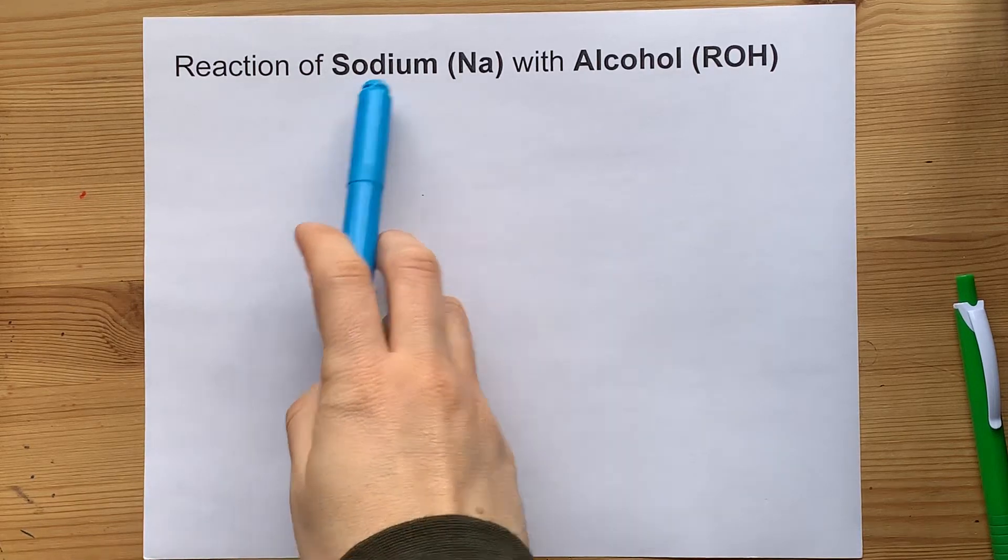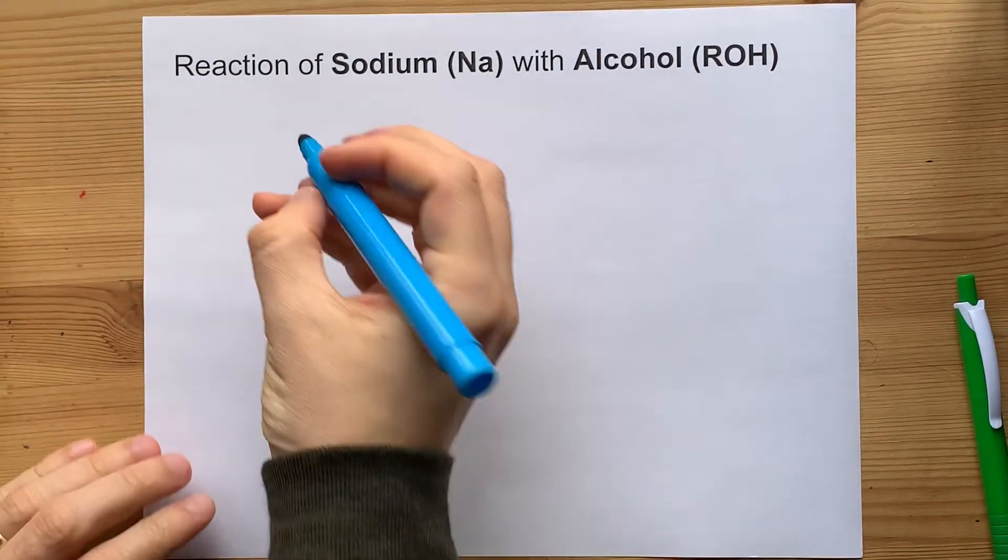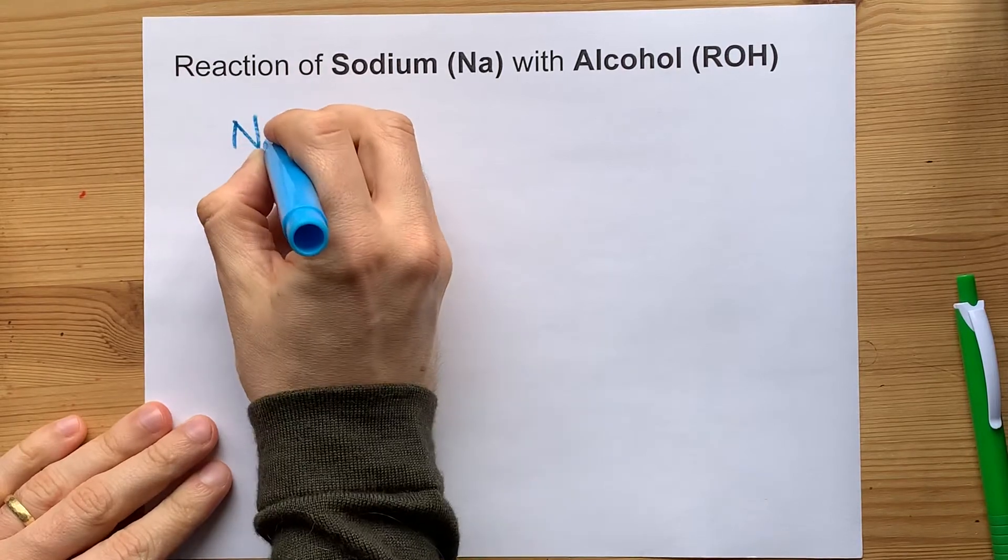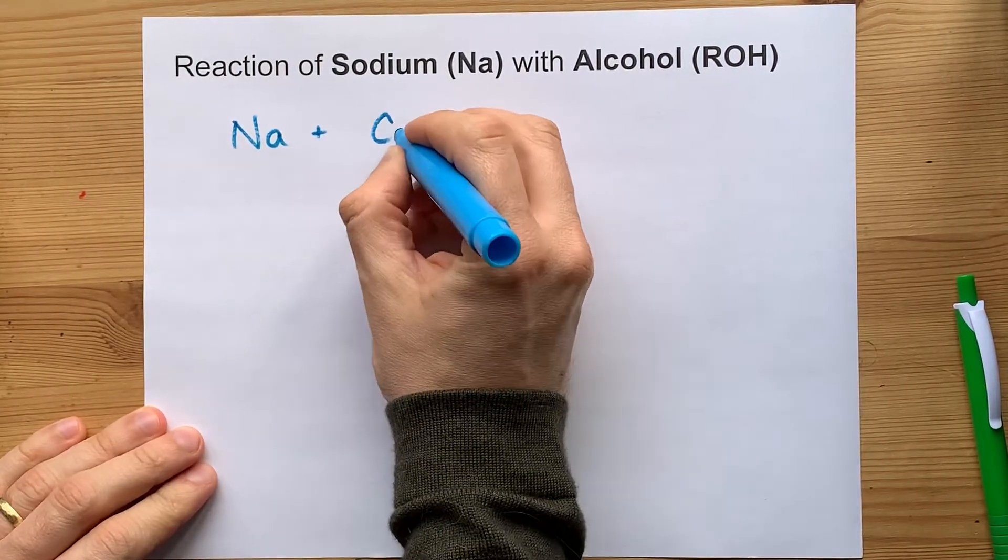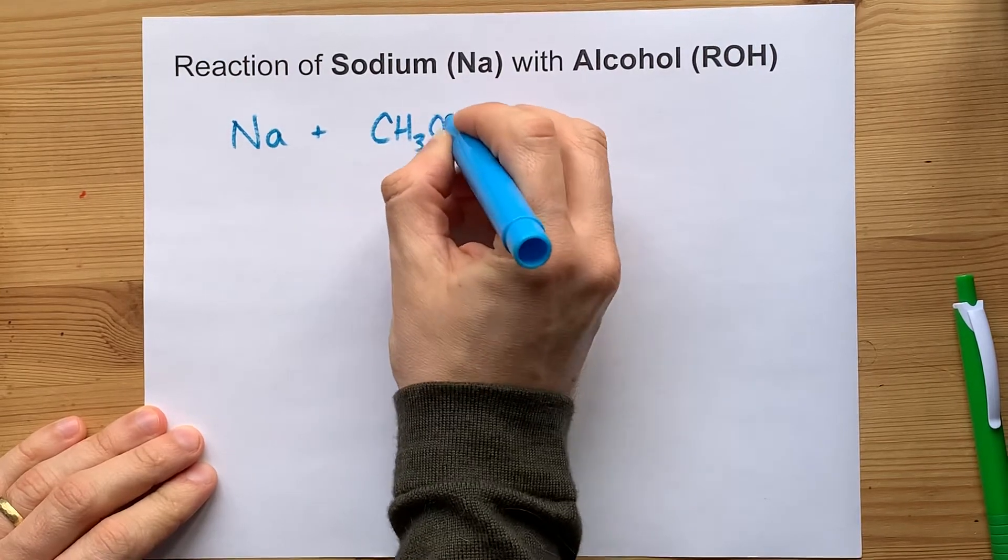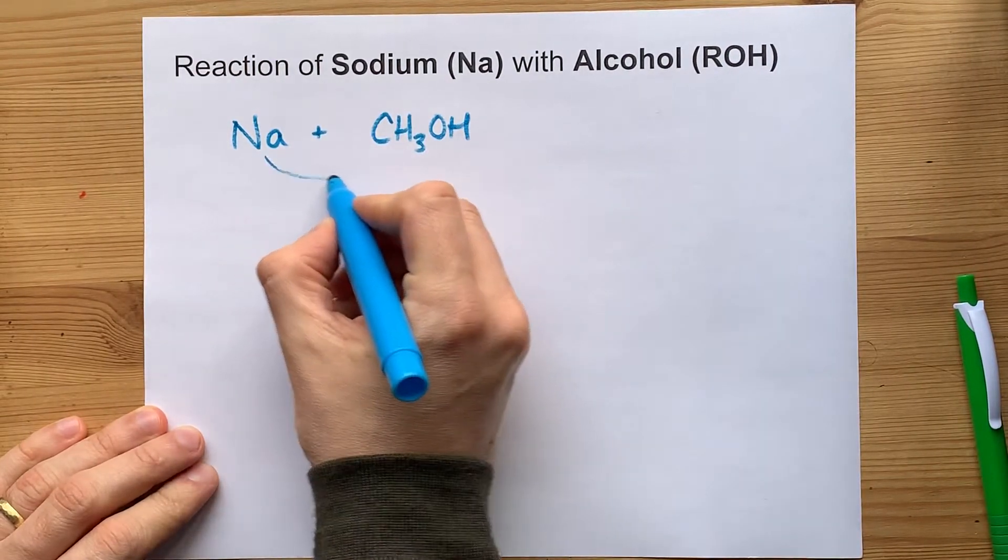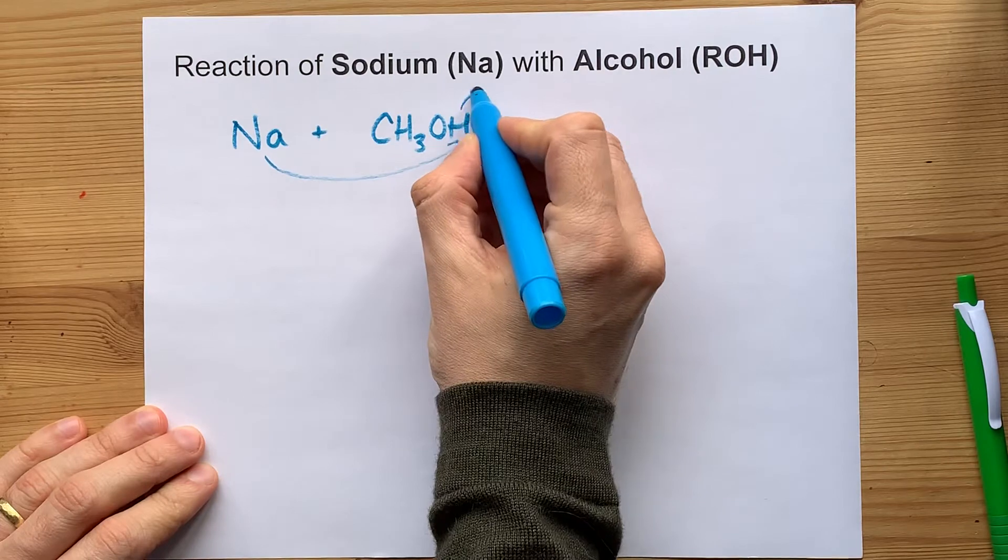The reaction of sodium with a pure alcohol is actually a single displacement reaction where the sodium takes the place of an H on the alcohol group. That Na takes the place of the H.